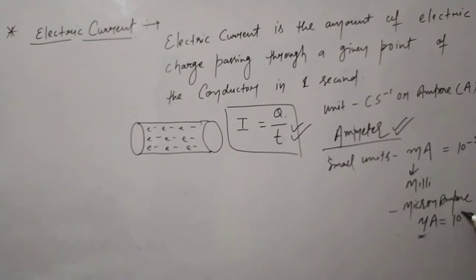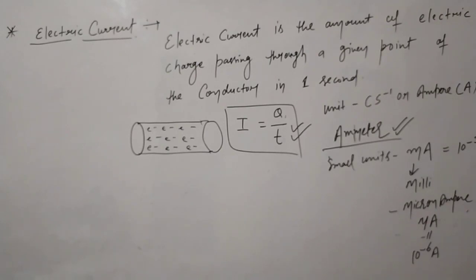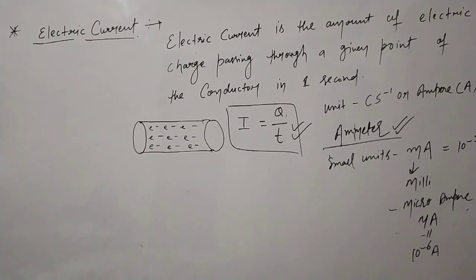Hello students. Last video we studied electricity topics, and today we will study conductors and insulators. Before, we studied what is electric charge, types of charge, and properties of charge. Today we will study conductors and insulators. Conductors are those substances through which electricity can pass or can flow.